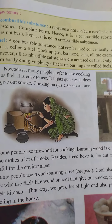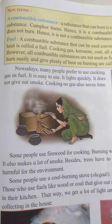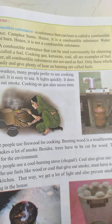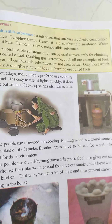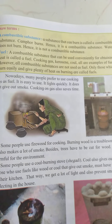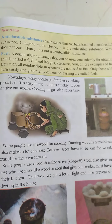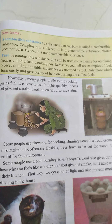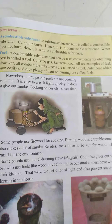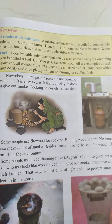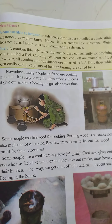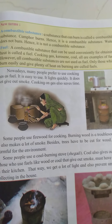Let's go to the next term, that is fuel. A combustible substance that can be used for obtaining heat is called a fuel. Substances which burn easily and give plenty of heat on burning are called fuels. For example, cooking gas, kerosene and coal.